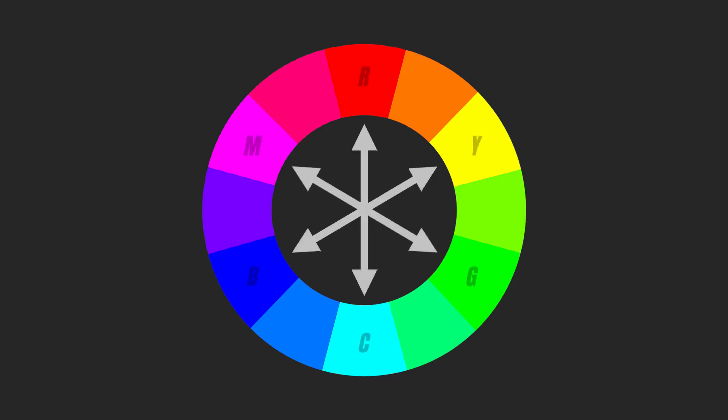For those of you that are new to color theory, when I talk about opposite colors, it really is what it sounds like — we're going to use pairs of colors that are at opposite ends of the color wheel. We're going to stick to primarily the RGB and CMY colors for the editing process. As you can see, the opposite of red is cyan, opposite of green is magenta, and opposite of blue is yellow. For today's tutorial, I'm mainly going to walk you through how we can use the cyan and red colors for our color grading process, but I'll also show you what it looks like for those other pairs.